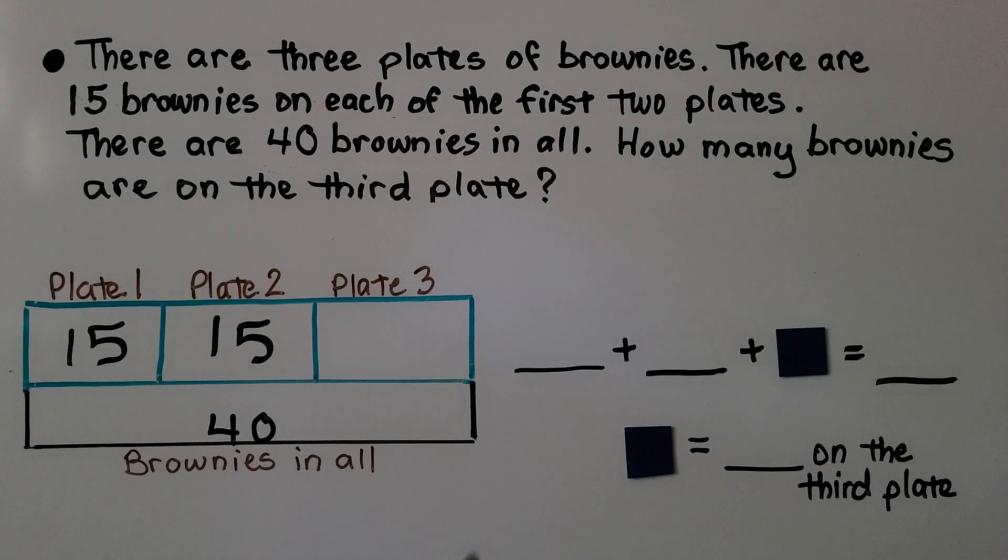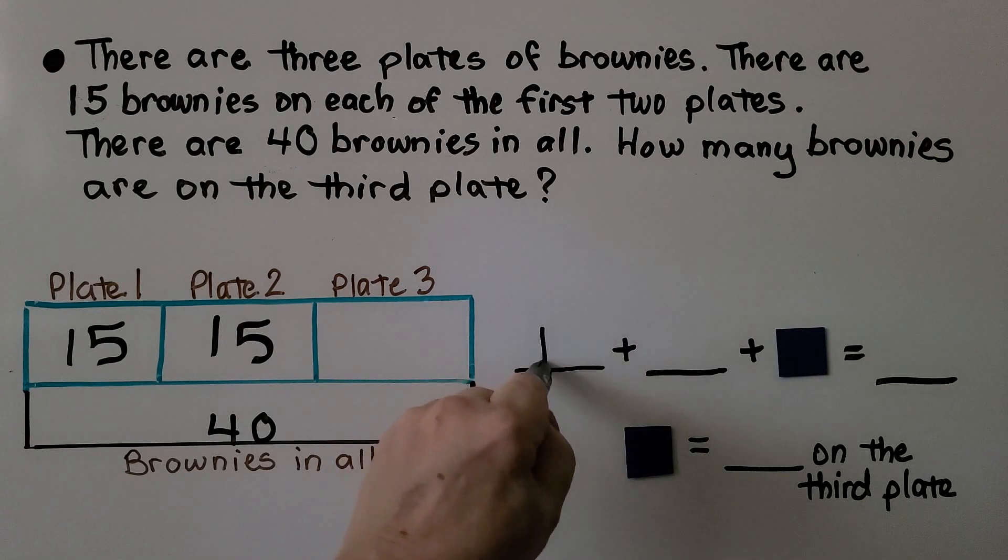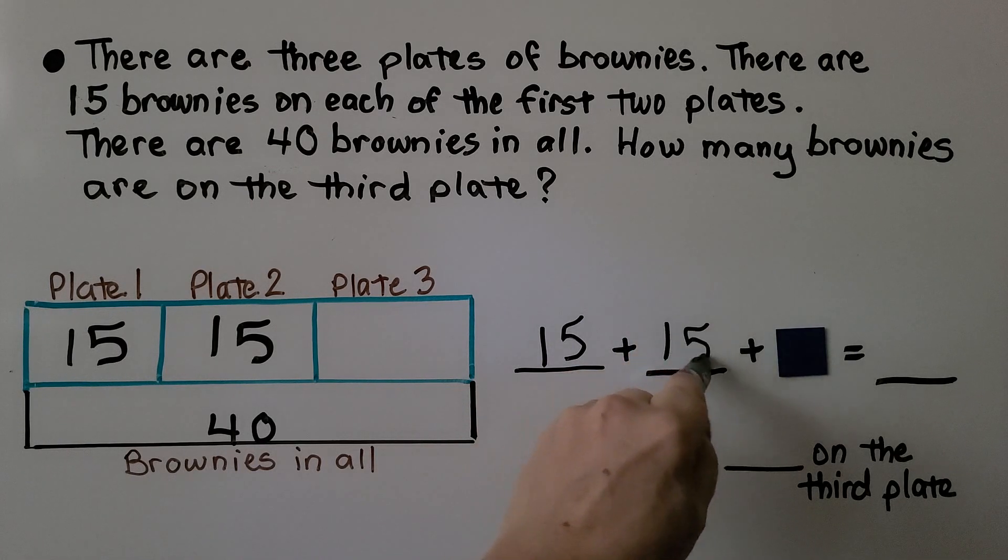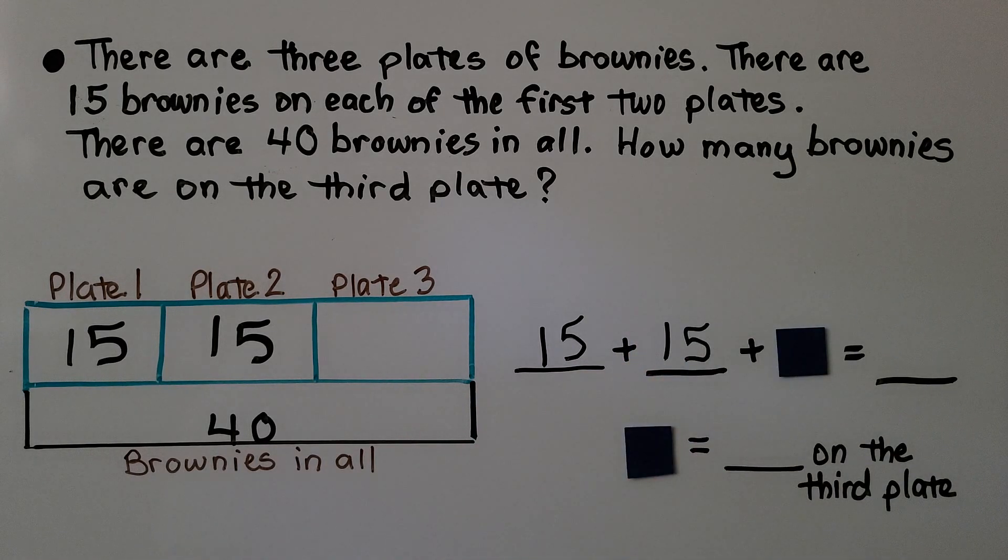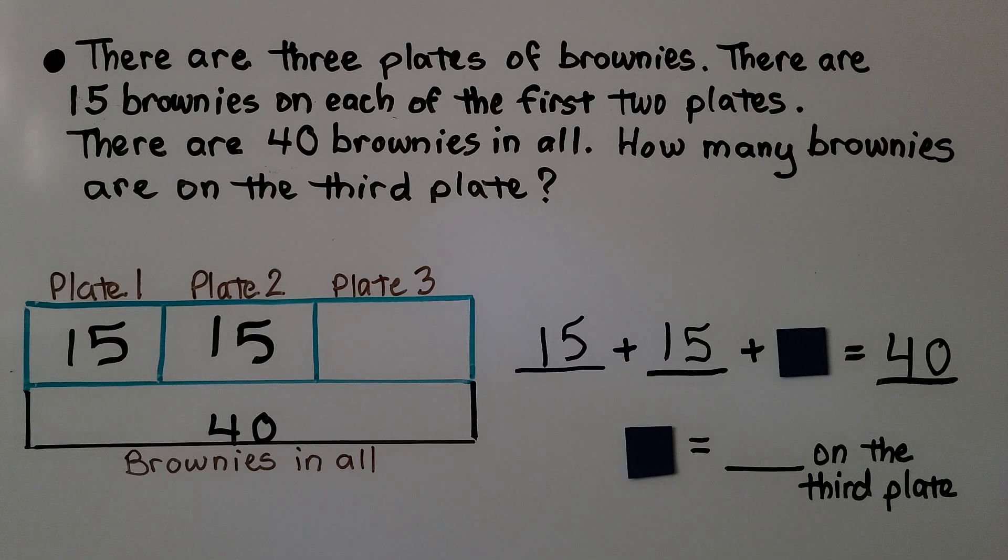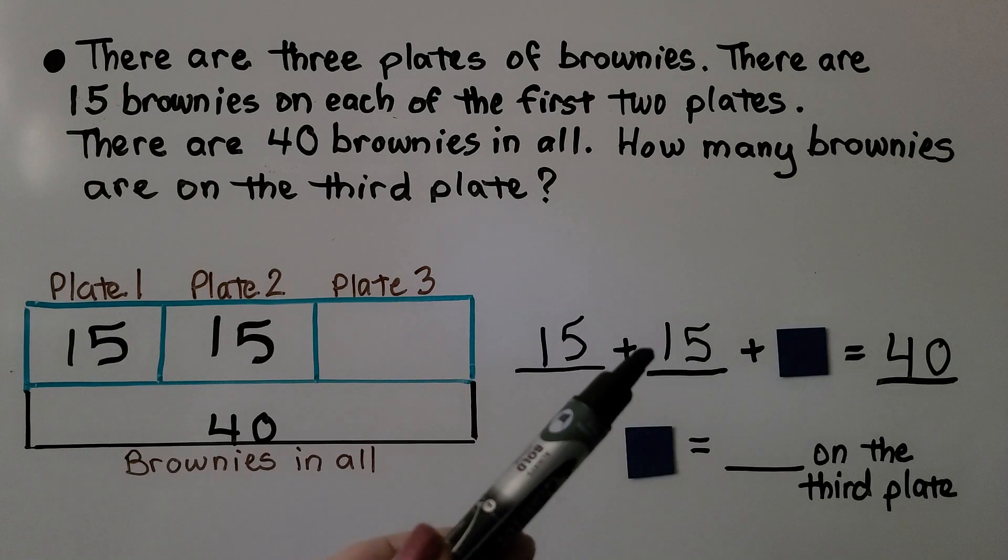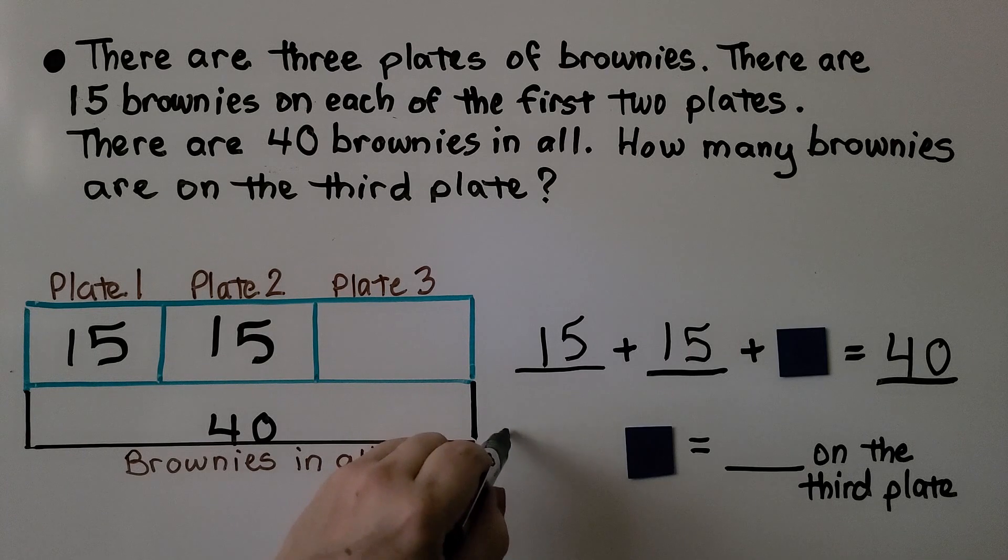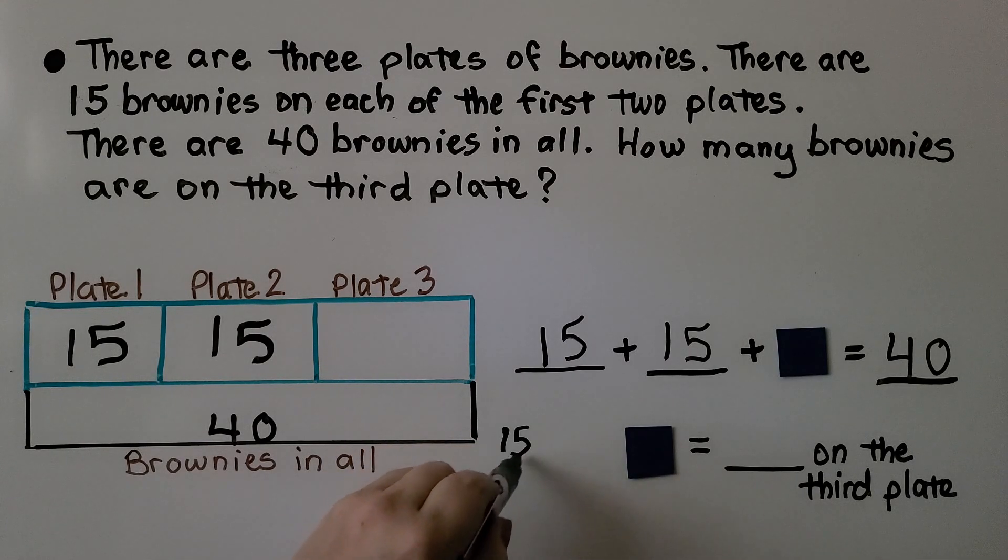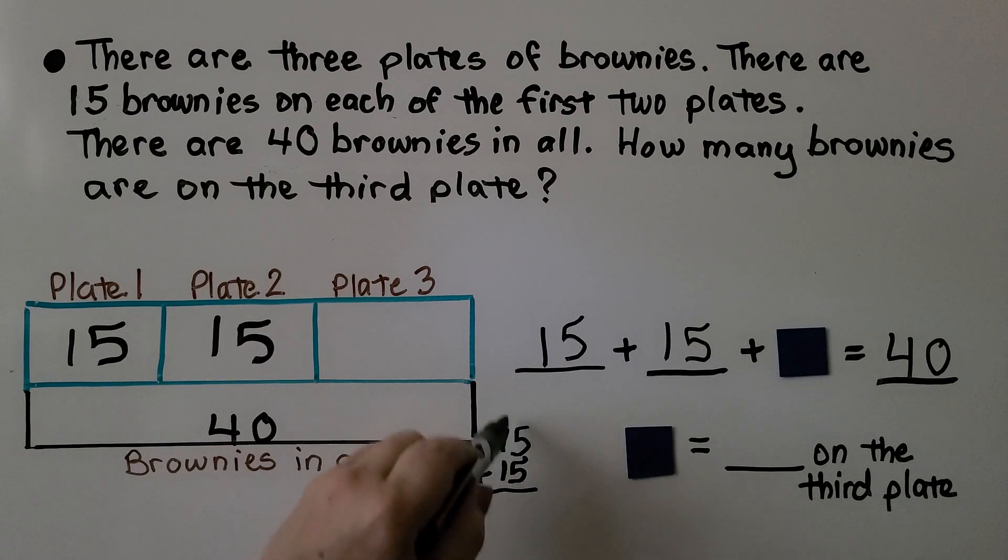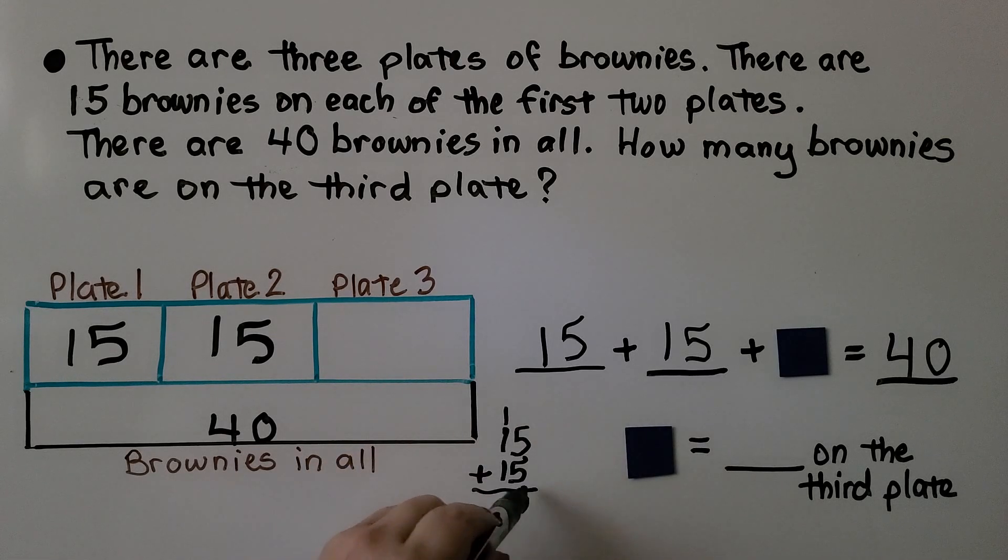We can write an addition sentence. 15 plus 15 plus that square is equal to 40. We can add 15 plus 15. We've got 5 plus 5 is 10, and another 10 that's 20, and another 10 that's 30. We can double check it by stacking them. 5 plus 5 is 10. We regroup the 10, put the 0 down, and we have three 10s. So that's 30, but there's 40 in all. So how many could be here?